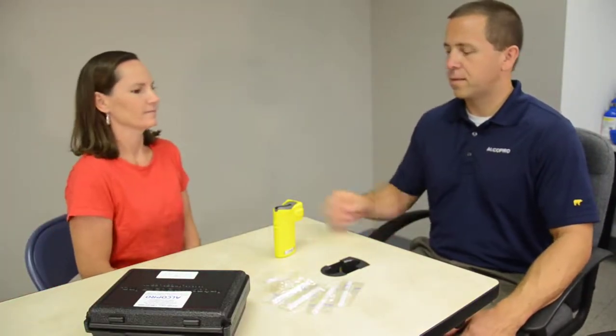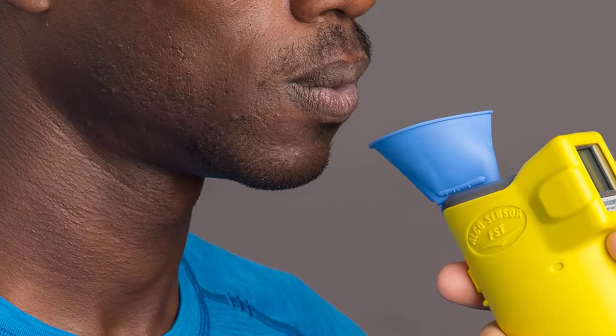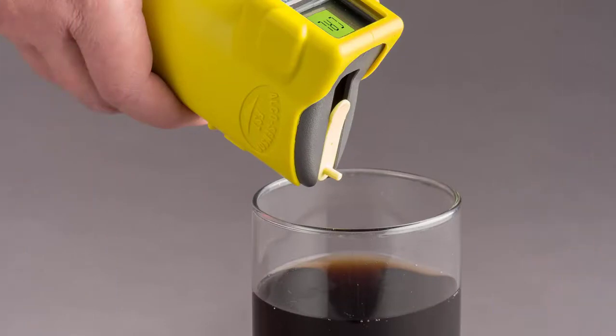Durable and easy to use, the AlkaSensor FST is designed to conduct a test using automatic or manual breath sampling and can perform passive alcohol testing on subjects. The device comes with a drink sniffer accessory that can be used to test beverages for the presence of alcohol.